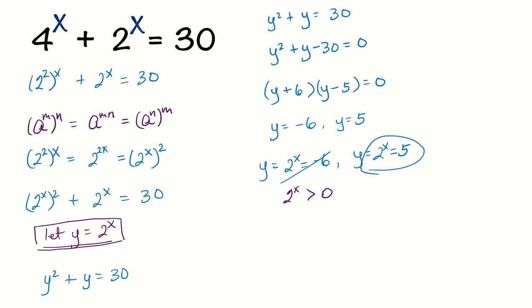So we get 2 raised to the x equals 5. I'm going to take the log of both sides. This becomes x log 2 equals log of 5, and then divide both sides by log 2.